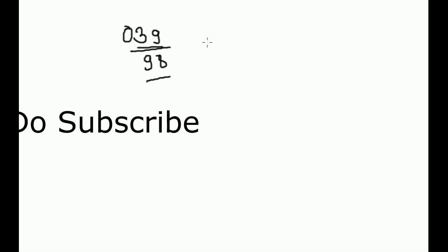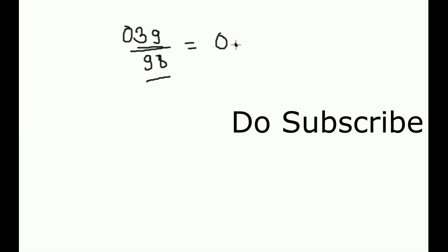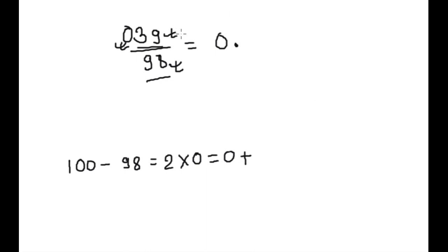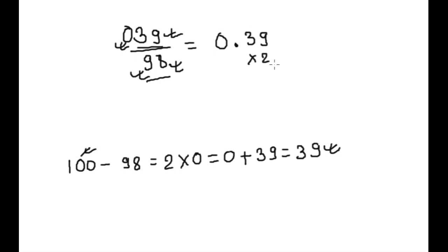Next example: 39 × 98. This is two-digit, this is two-digit, so the third digit is 0 — our answer will start with 0. Next step: 100 minus 98 is 2, multiply by 0 equals 0, plus 39 equals 39. We write 39 here, then multiply by 2 — because 98 is 2 less than 100 — giving 78. So 0.3978 is our answer.